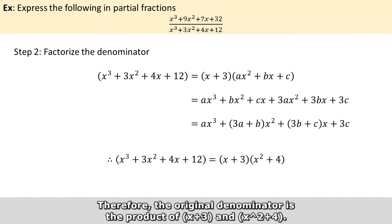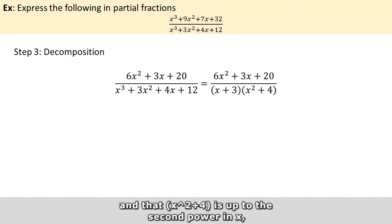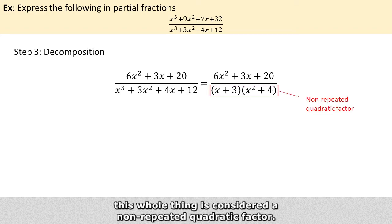Therefore the original denominator is the product of x + 3 and x² + 4. And because x equals minus 3 is the only root and x² + 4 is up to the second power in x, this whole thing is considered a non-repeated quadratic factor.